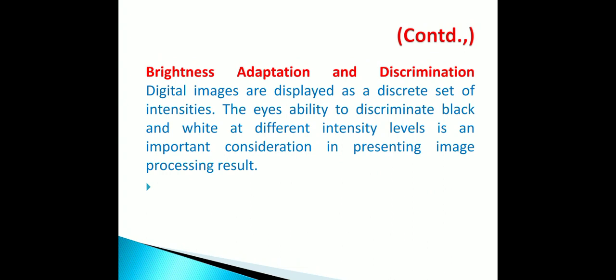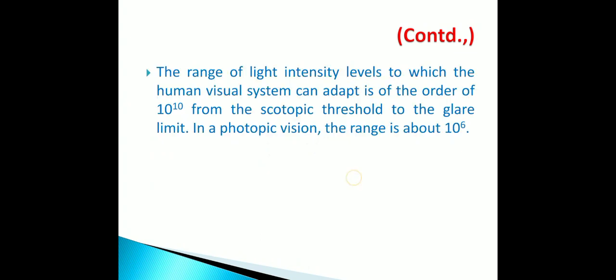Next we look at brightness adaptation and discrimination. Digital images are displayed as a discrete set of intensities, and the eye's ability to discriminate between different intensity levels is an important consideration in presenting image processing results. The range of light intensity levels to which the human visual system can adapt is of the order of 10 to the power of 10 — from the scotopic threshold to the glare limit. In photopic vision, the range is 10 to the power of 6.